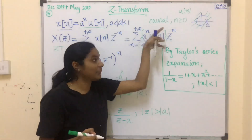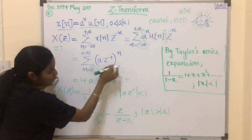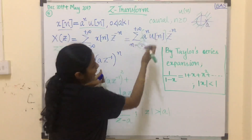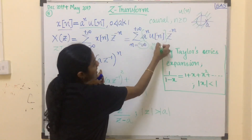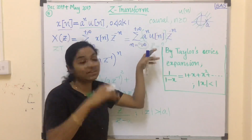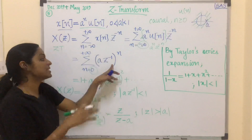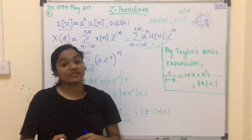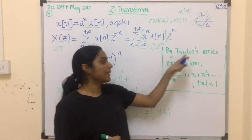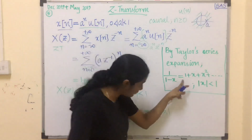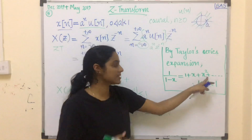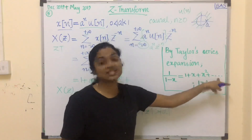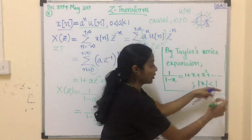So replacing u(n) and writing n = 0 to +∞, the remaining part is a^n · z^(−n). Taking the power n as common, this becomes Σ (a · z^(−1))^n. In engineering mathematics we are familiar with the Taylor series expansion: 1/(1−x) = 1 + x + x² + ..., and the condition to satisfy this equation is |x| < 1.